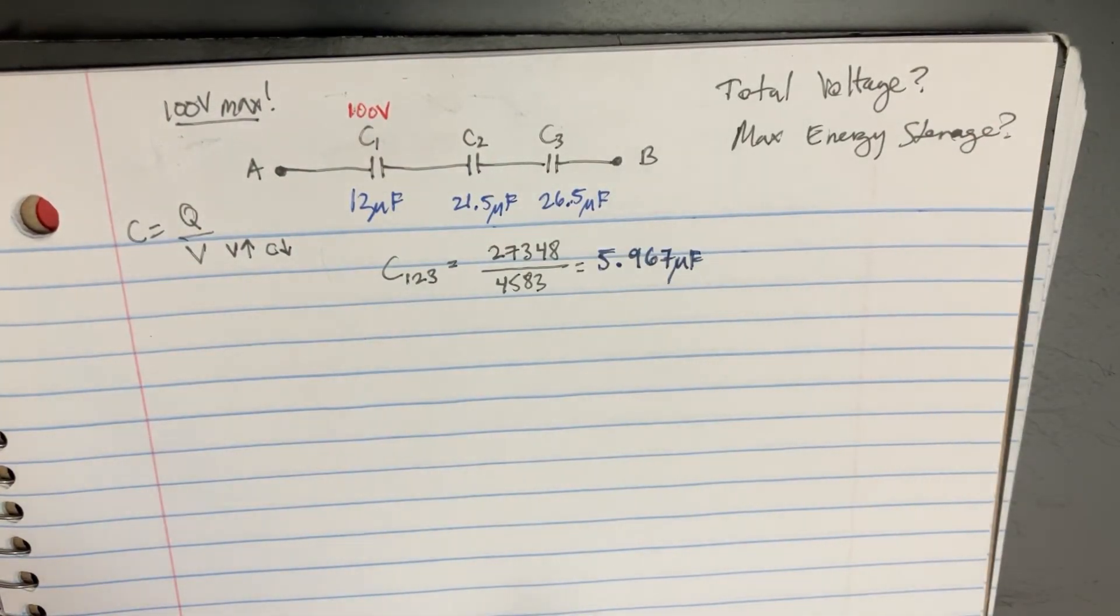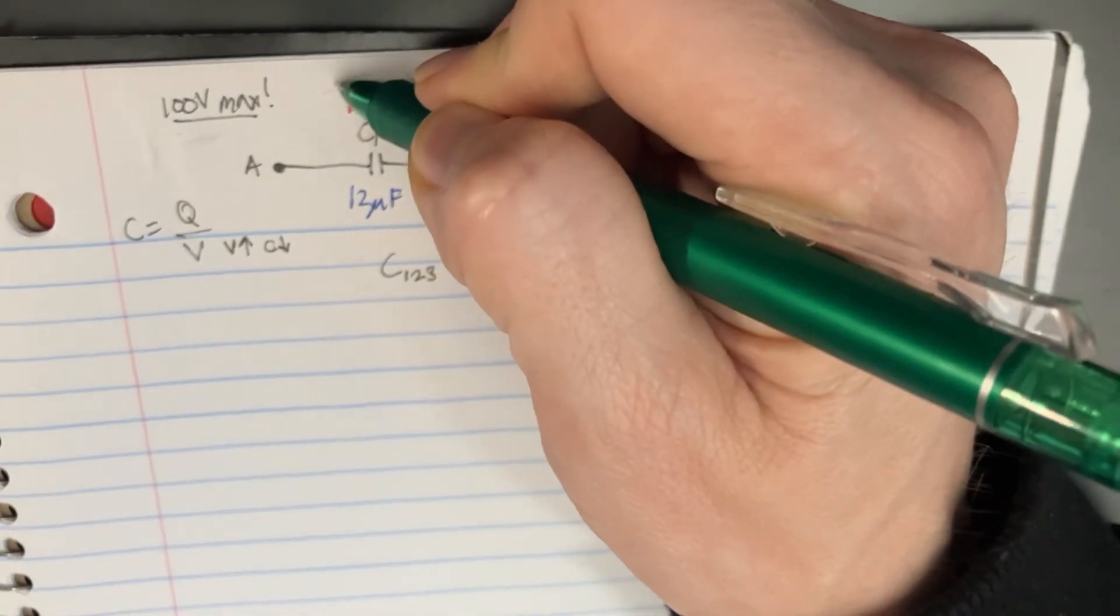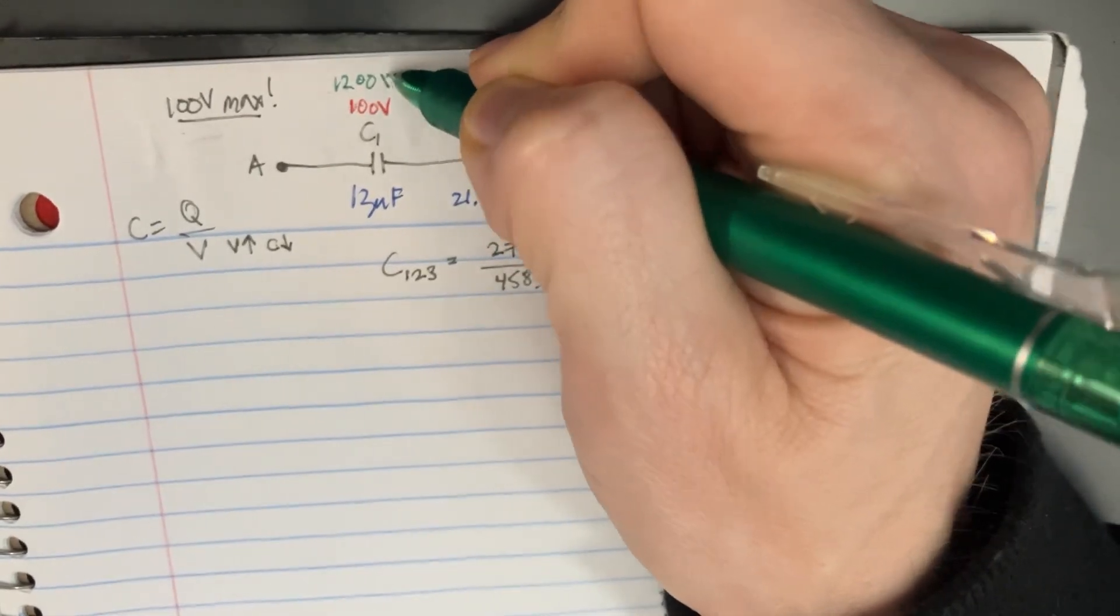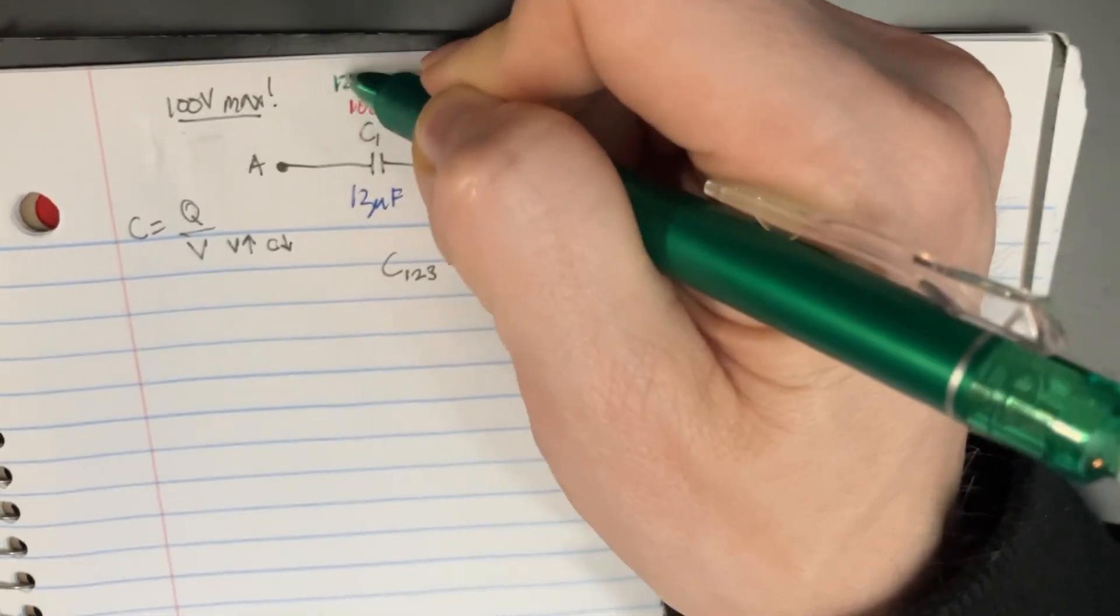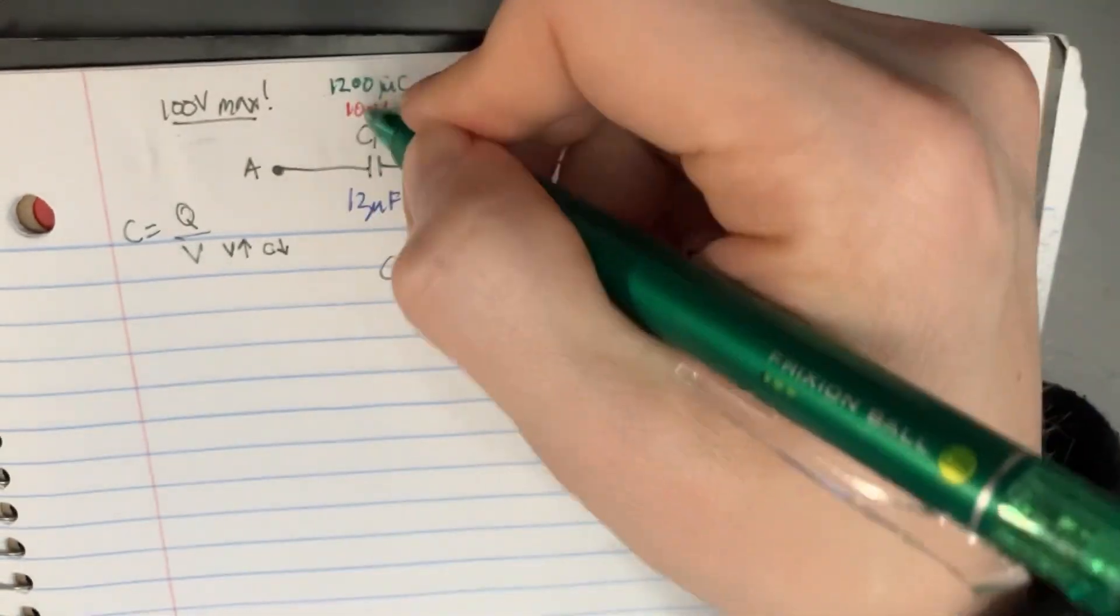So we're going to get 1,200, this is coulombs, 1,200 coulombs. And I should actually make microcoulombs. So microcoulombs across this thing.